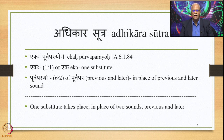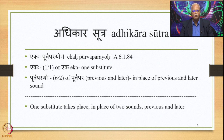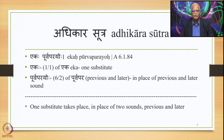Dvishthanika Ekadesha is stated by the Adhikara Sutra Ekah Purvaparayoho 6.1.84. This Sutra has two padas: Ekah (1/1), meaning one substitute, and Purvaparayoho (6/2), meaning 'of previous and later,' i.e., in place of the previous and the later sound. One substitute takes place in place of two sounds, namely the previous and the later.